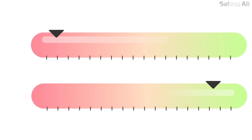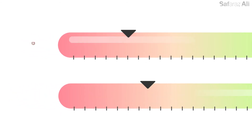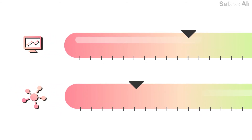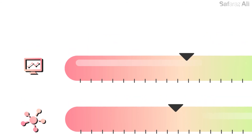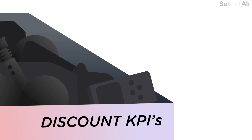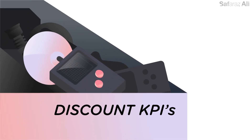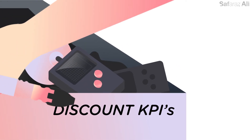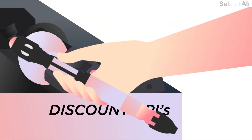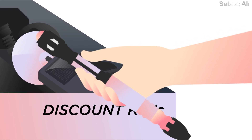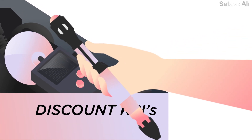Tip two: keep it simple. Be careful not to select too many KPIs. Choosing just one or two will keep you focused on achieving your goals. Tip three: review them regularly. Over time your priorities will change, which means that your KPIs might too. Review your KPIs regularly to ensure they remain relevant.